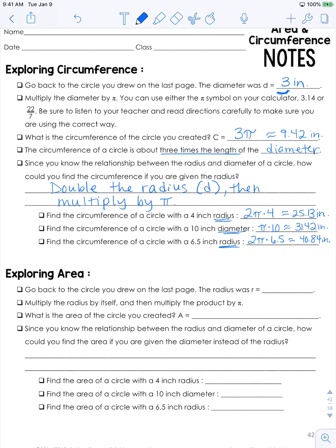So going back to the circle that I drew previously, the radius was 1.5 inches. Again, you can use mine or you can use your information. So you are going to multiply the radius by itself and then multiply the product by pi. That is using the formula A = πr².